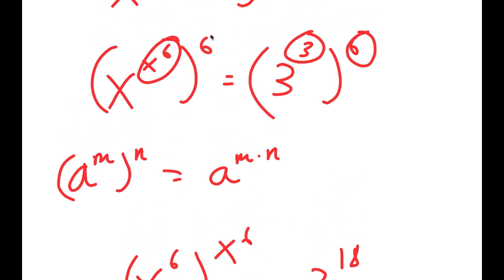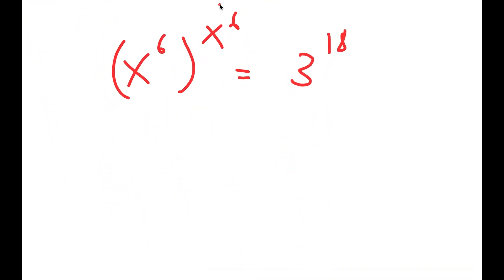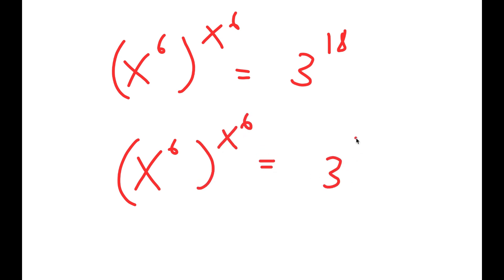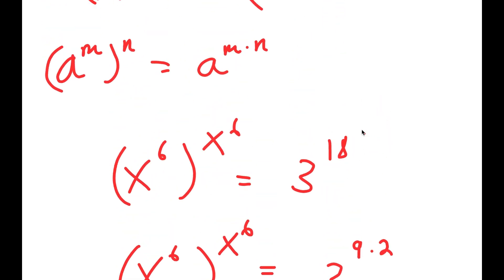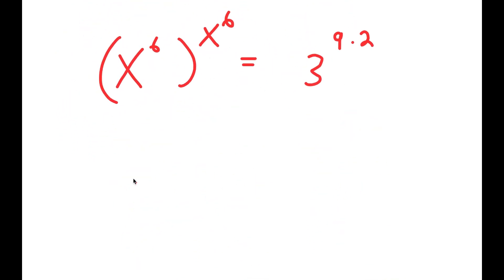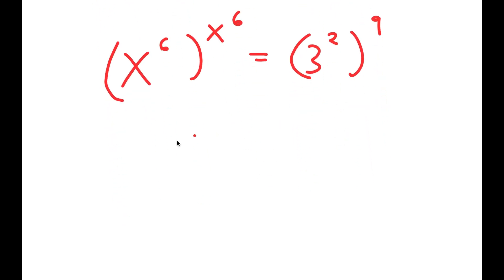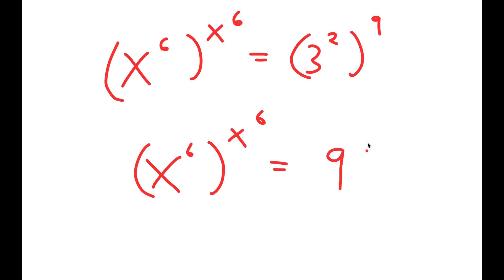I also switch the places of x to the power of 6 and 6. Now I'm going to rewrite 3 to the power of 18 as 3 to the power of 9 times 2. Using the reverse of this property, I change this into x to the power of 6 to the power of x to the power of 6, equal to 3 squared to the power of 9. And since 3 squared is 9, I get x to the power of 6 to the power of x to the power of 6, equal to 9 to the power of 9.